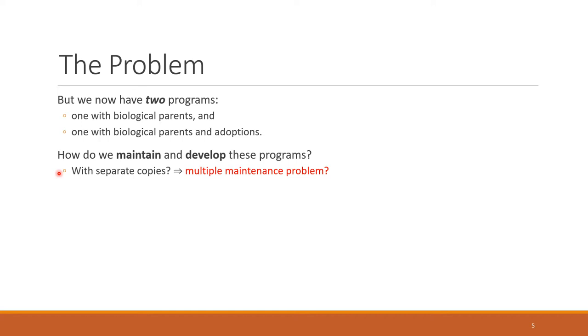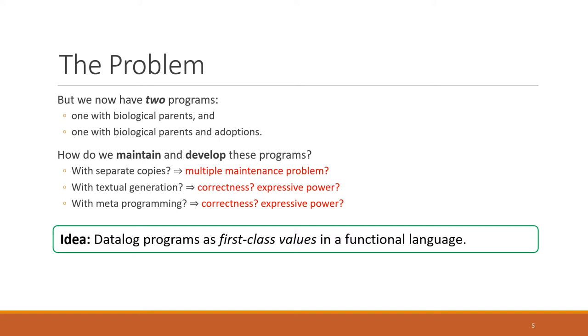Well, we could have separate copies, so separate files. But then if we find a bug in one, we have to go and fix it in both. So we have the multiple maintenance problem. We could try to textually generate them, write, let's say, a Java program and output the programs from that. But how can we be sure that the generated programs are correct? And what is the expressive power of doing this? We could also try some kind of meta programming, maybe use the C preprocessor to write some macros that generate these programs. That might be slightly more sophisticated than using Java, but still there are concerns about correctness and expressive power.